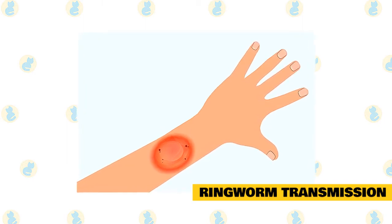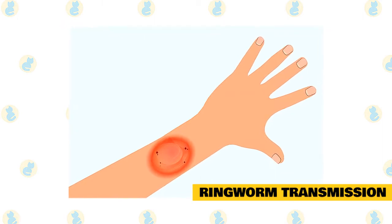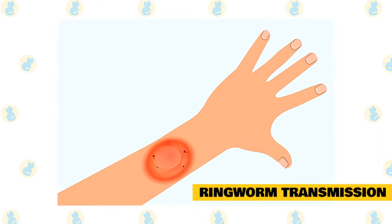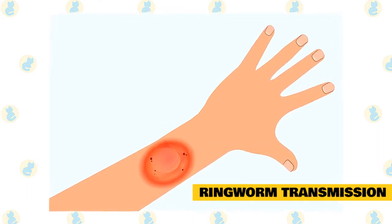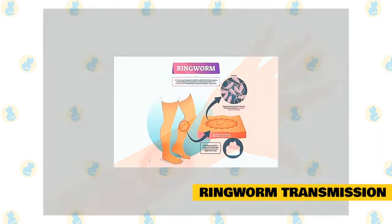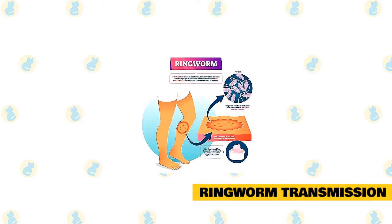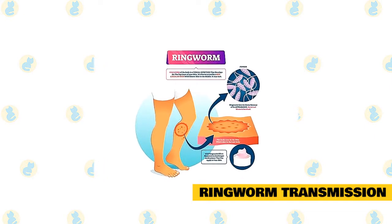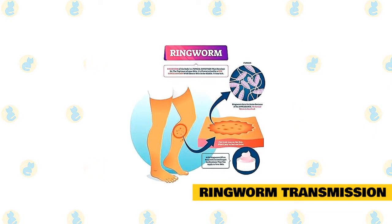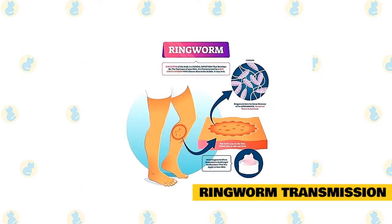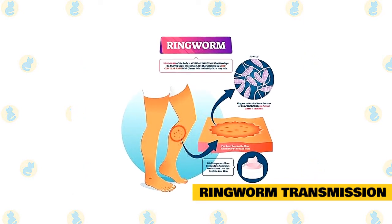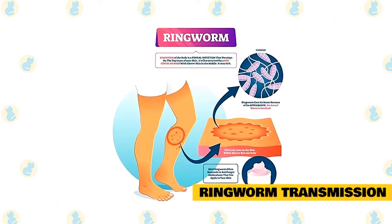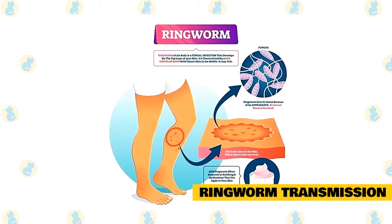Healthy adult humans are usually resistant to infection unless there is a break in the skin such as a scratch. Elderly people, young children, and adults with immune system weaknesses or skin sensitivities are especially susceptible to ringworm infection. If your child has ringworm, he or she may have acquired it from your pet or from another child at school. If you or any of your family members develop suspicious skin lesions, see your family physician immediately. The incubation period between exposure to ringworm fungus and the development of lesions usually ranges from 7 to 14 days, and some cases may take up to 21 days.